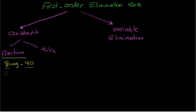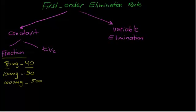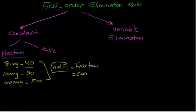Another example to make sure you understand: if you give 100 mg of the drug, the constant fraction — which is half — will lead to 50. If you give 1000 mg of the drug, half of 1000 is 500. So half of 80 is 40, half of 100 is 50, and half of 1000 is 500. In all cases, half of the drug is being eliminated. Half equals fraction, and fraction equals constant — the constant fraction of the drug being eliminated.